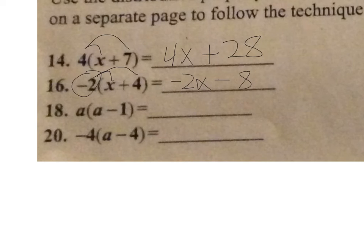a times a is a squared. And then a times a minus 1 is going to be minus a. a squared minus a, which is 1a. But we don't have to write the 1 when we just have a single. We don't write that in front of the variable. Negative 4 times a is negative 4a. And then negative 4 times a minus 4 is actually negative times a negative. So it becomes a positive plus. And then 4 times 4 is 16.